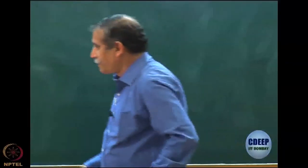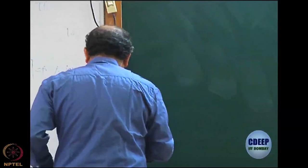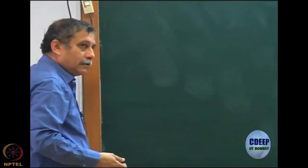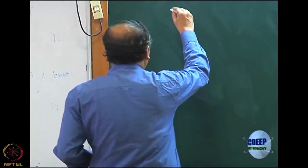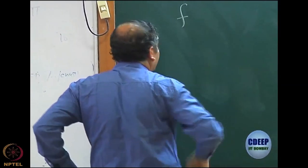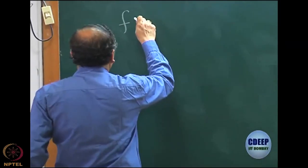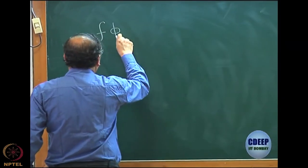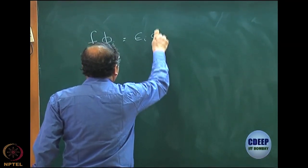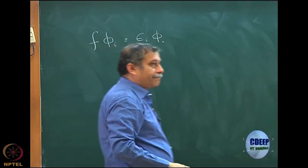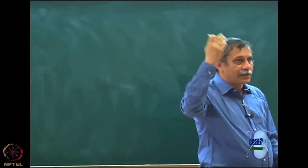We did the Roothaan Hartree-Fock equation. Let me quickly derive it again for continuity. We started from the canonical Hartree-Fock equation which was in space orbitals. Let us assume that the φ_i's are the space orbitals and our χ's are the spin orbitals.